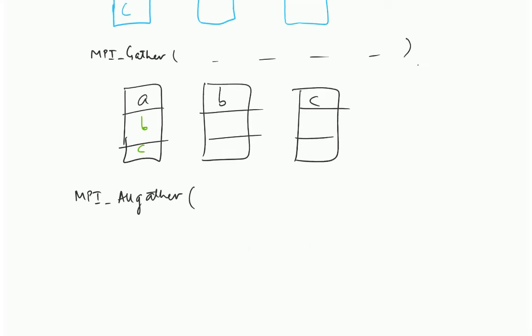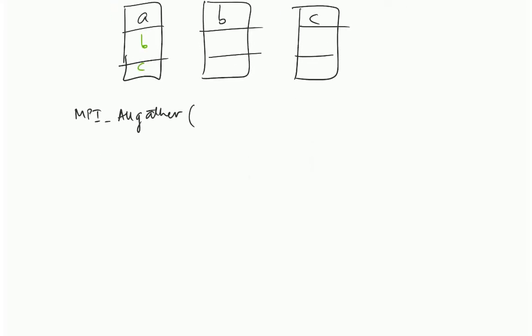Therefore, the prototype for MPI all gather is slightly different from gather. The only difference is that you do not have the root. All the other parameters are the same, only the root is not there.